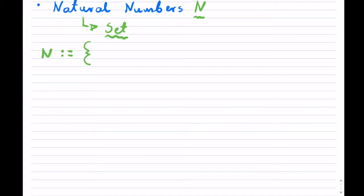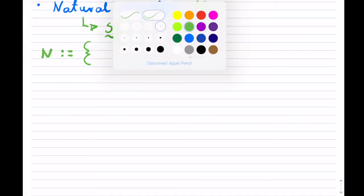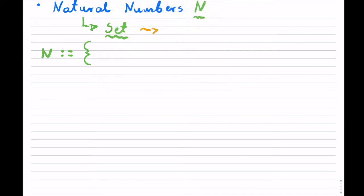Natural numbers only include the set of counting numbers.